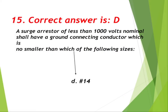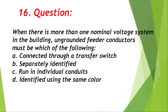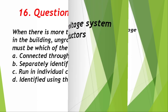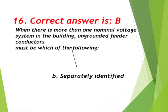Question number 16: When there is more than one nominal voltage system in a building, ungrounded feeder conductors must be which of the following? A. Connected through a transfer switch, B. Separately identified, C. Run in individual conduits, D. Identified using the same color. Correct answer is B, separately identified.